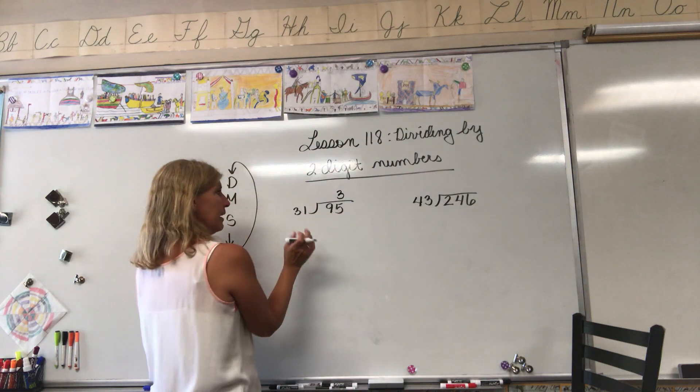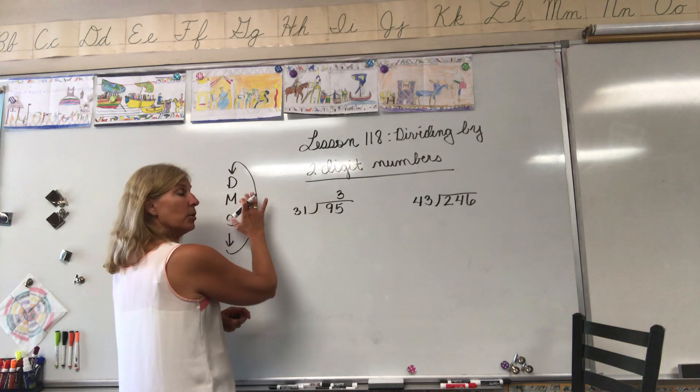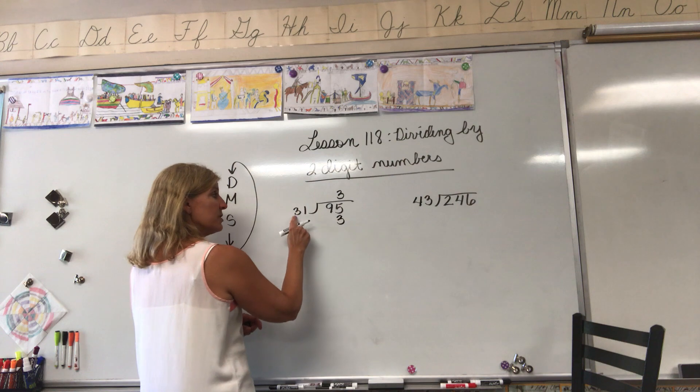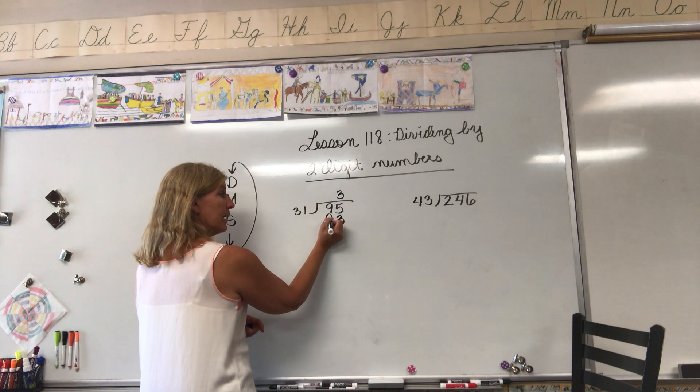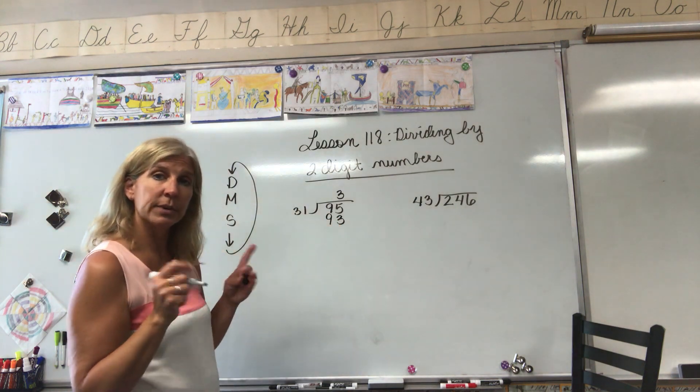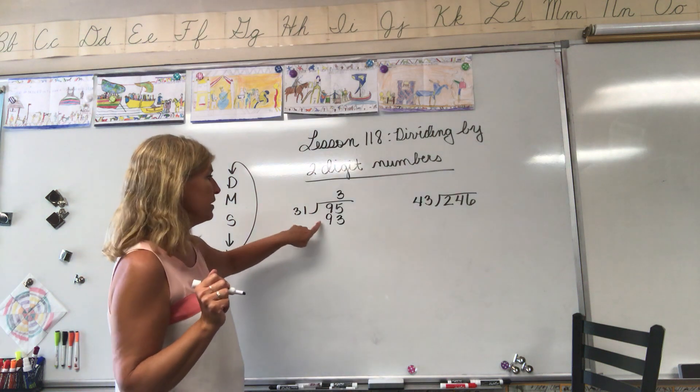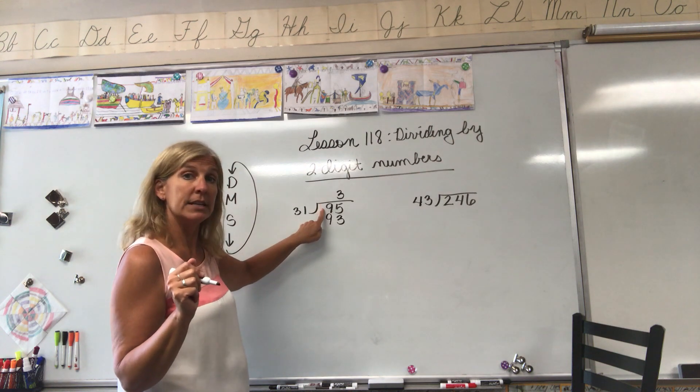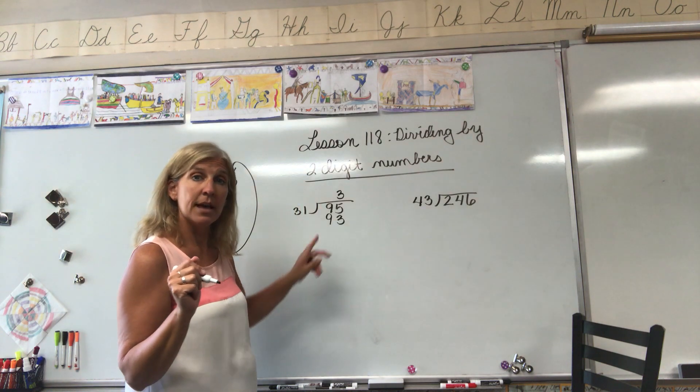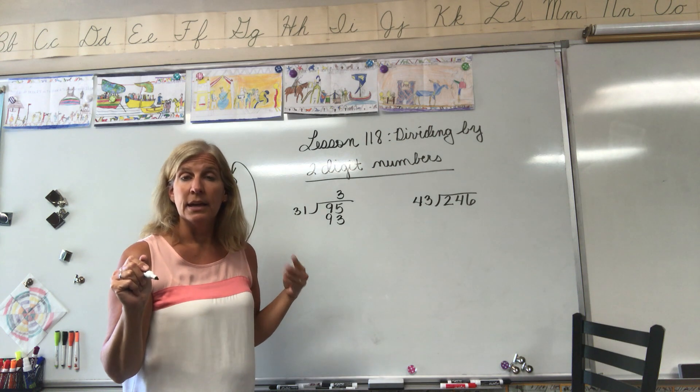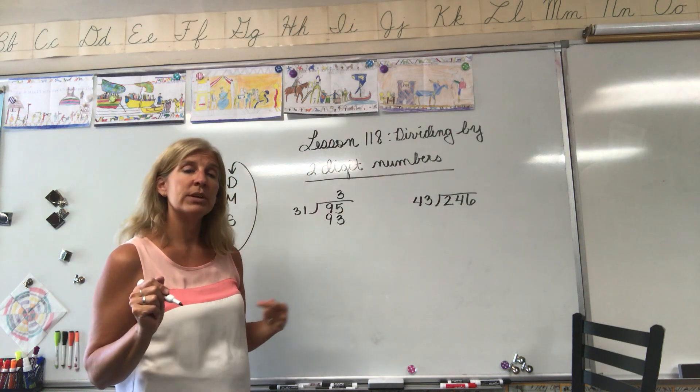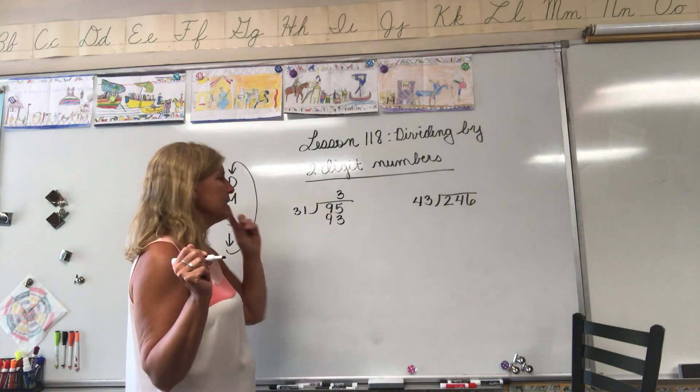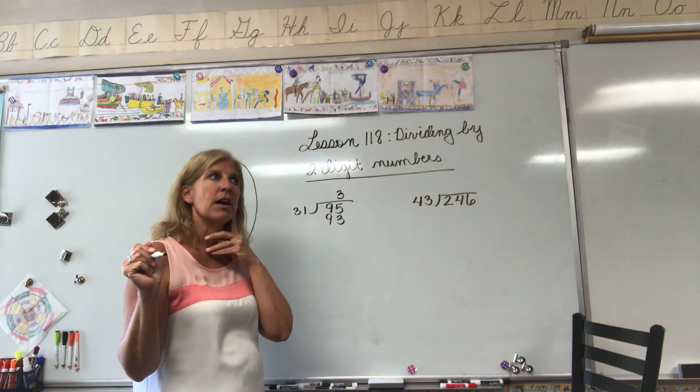Now we're going to multiply. Three times one equals three, three times three equals nine. Now here we need to stop. This is where we're going to talk a little bit about trial and error. If the number that we just wrote, the 93, is bigger than 95, then that would tell us that we had made a mistake and that we guessed too high.